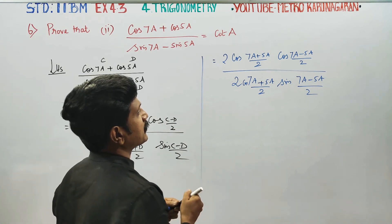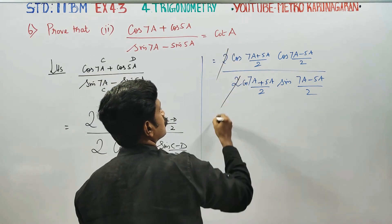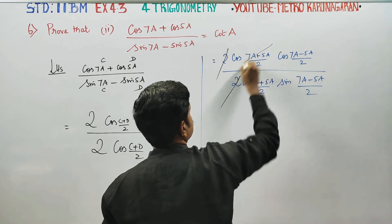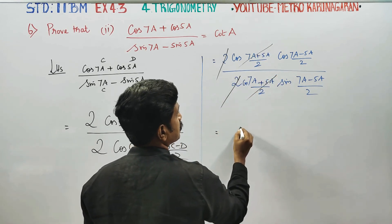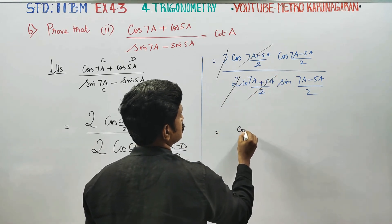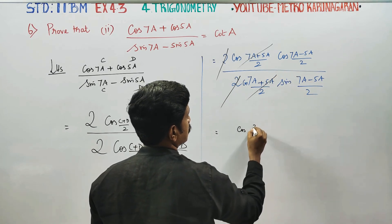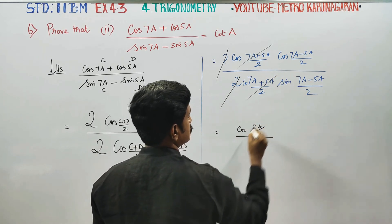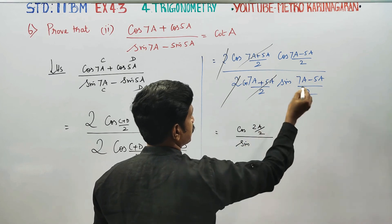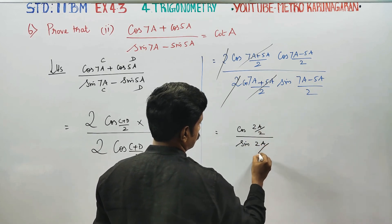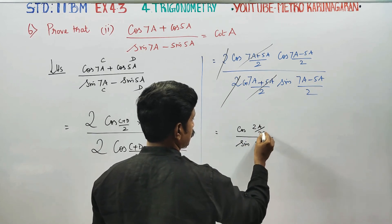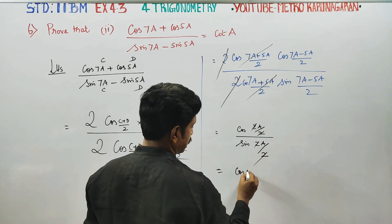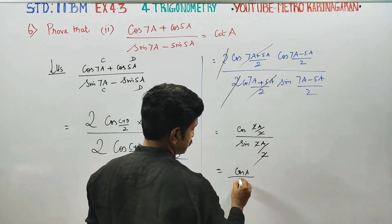You can see the 2 and 2 cancel, and 7A plus 5A by 2 terms cancel as well. Then cos 7A plus 5A by 2, and sin 7A plus 5A by 2 simplify. The 2 and 2 cancel, giving us cos A by sin A.